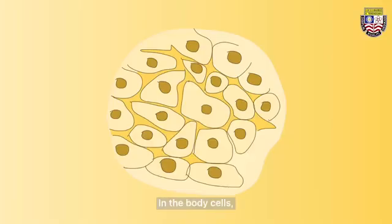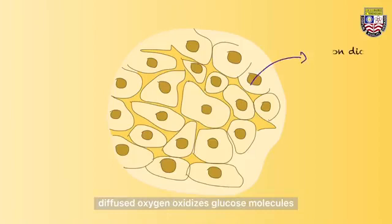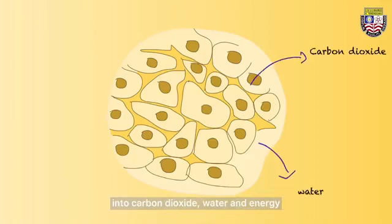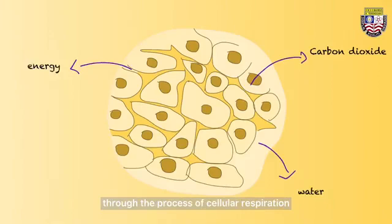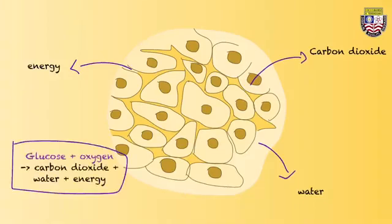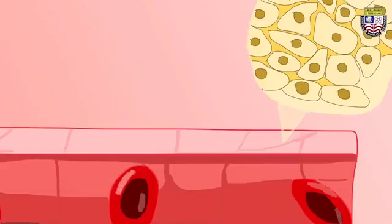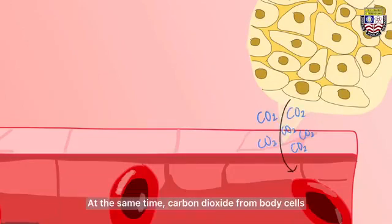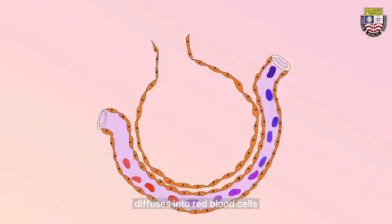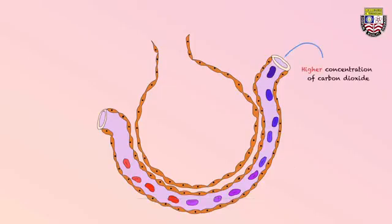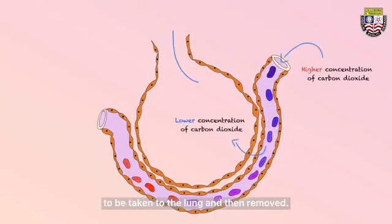In the body cells, the diffused oxygen oxidizes glucose molecules into carbon dioxide, water, and energy through the process of cellular respiration, as summarized in the following chemical equation. At the same time, carbon dioxide from body cells diffuses into red blood cells to be taken to the lungs and then removed.